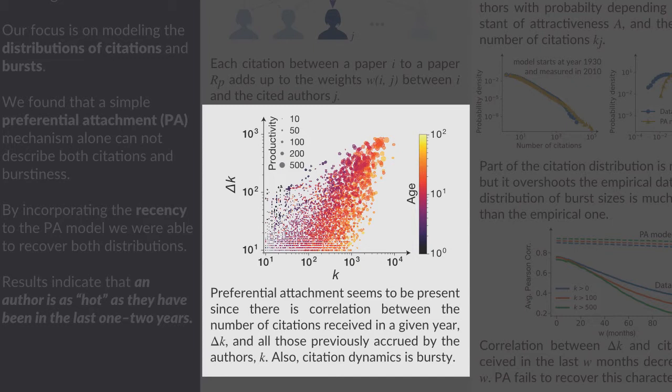We first checked for evidence of preferential attachment by looking at the relationships between number of citations received in a certain year and those obtained previously. We found some correlation indicating preferential attachment, but we also found a very broad distribution, indicating burst dynamics.